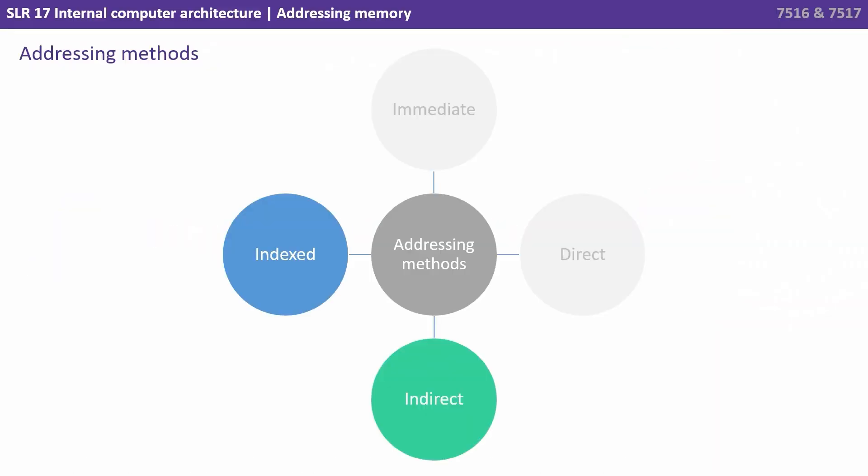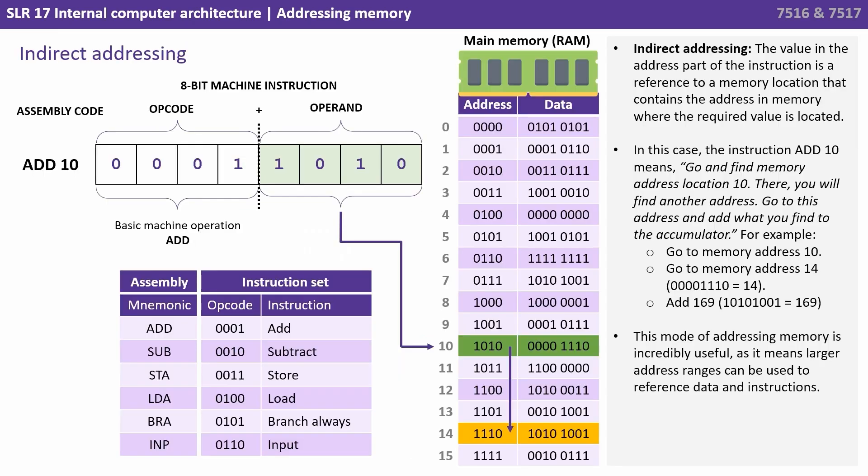We've also got indexed and indirect addressing. With indirect addressing the value in the address part of the instruction is a reference to a memory location that contains the address in memory where the required value is located. So in this case the instruction ADD 10 means go and find memory address location 10, and there you'll find another address. Go to this address and add what you find to the accumulator.